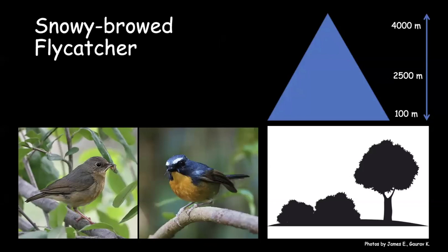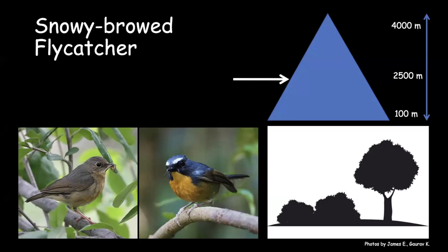The snowy-browed flycatcher is one of the prettiest flycatchers. You can always see a nice tinge of brown on the wings, and sometimes it is misidentified as rusty-billed shortwing. It has a very strong bill and is exclusively a bird of undergrowth, going up to 2,005 meters when breeding. Females have a slight bluish to gray tinge on the back, which is unusual for small-sized flycatchers.